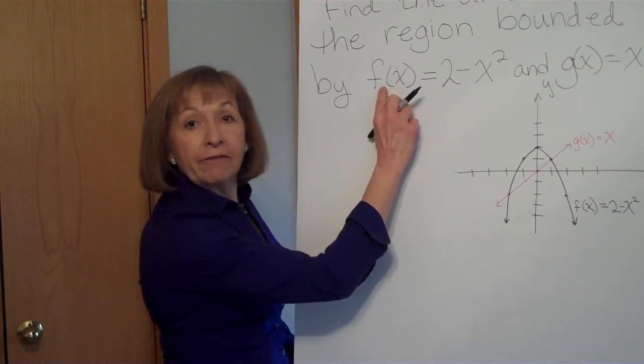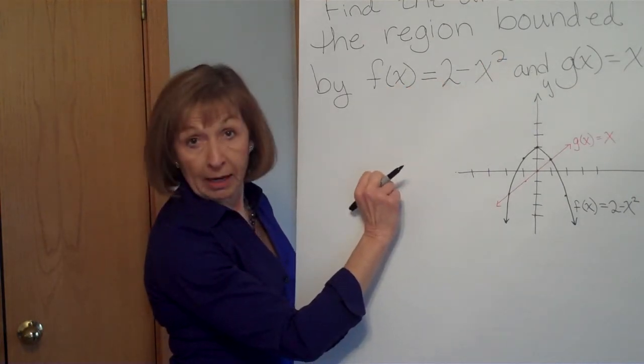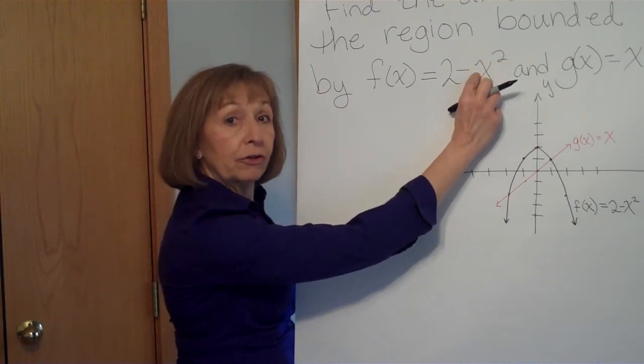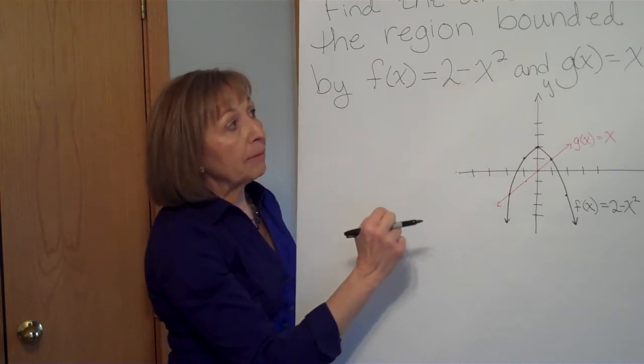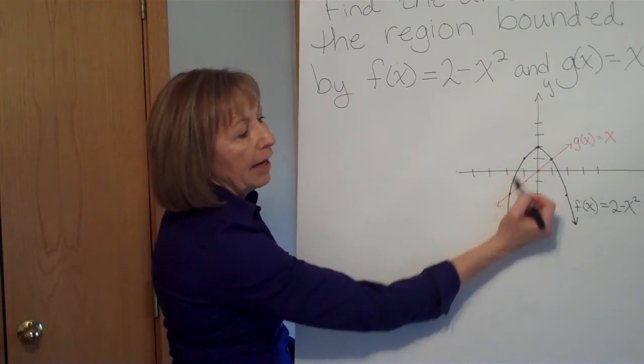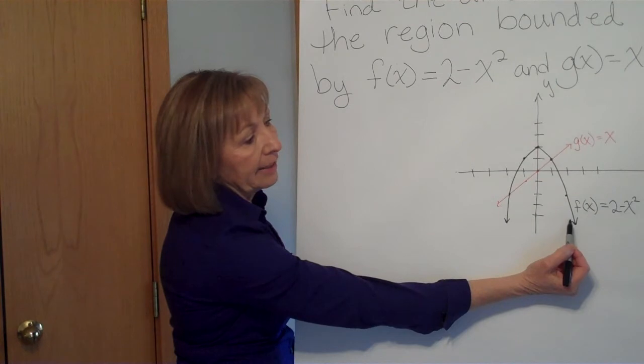Our first function, f of x, is 2 minus x squared. So it's a parabola. Its leading coefficient is the coefficient in front of the highest degree term, so it's negative 1, and so that means that the parabola is going down. And it has a vertex at 0, 2. So here I've graphed the function, f of x is equal to 2 minus x squared.